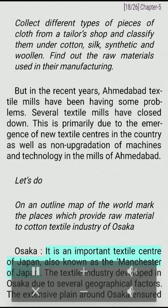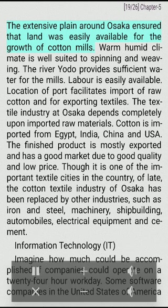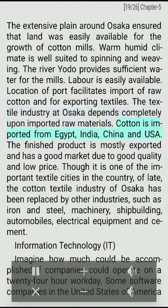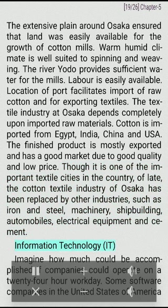Osaka is an important textile center of Japan, also known as the Manchester of Japan. The textile industry developed in Osaka due to several geographical factors. The extensive plain around Osaka ensured land was easily available for cotton mills. Warm, humid climate is well suited to spinning and weaving. The river Yodo provides sufficient water. Labor is easily available. Its port facilitates import of raw cotton and export of textiles. The textile industry at Osaka depends completely upon imported raw materials — cotton is imported from Egypt, India, China, and the USA. Though important, the cotton textile industry of Osaka has been replaced by other industries such as iron and steel, machinery, shipbuilding, automobiles, electrical equipment, and cement.